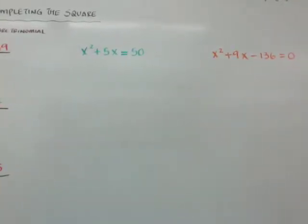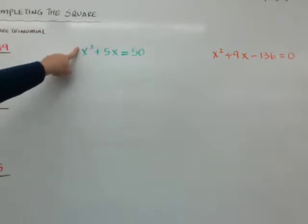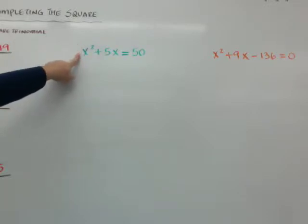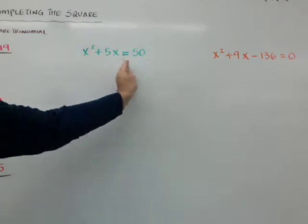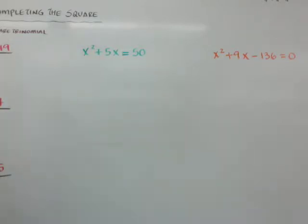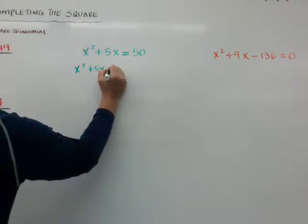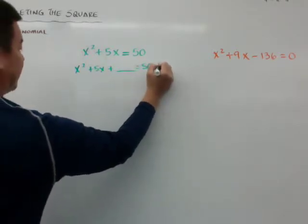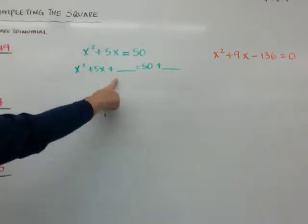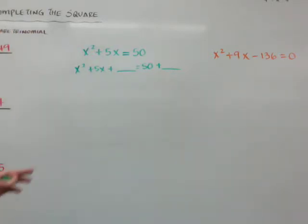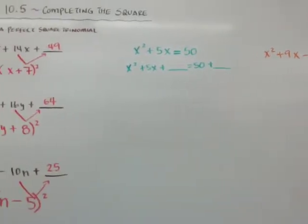When solving, the first thing you want to do is make sure the coefficient a in front of x squared is 1. In these first few examples there's an invisible 1, so we're good. You also want to move everything else to the right side of the equal sign. So you go x squared plus 5x plus blank equals 50 plus blank. Whatever you do to one side of the equal sign, you have to do to the other — whatever I add here, I also add here.